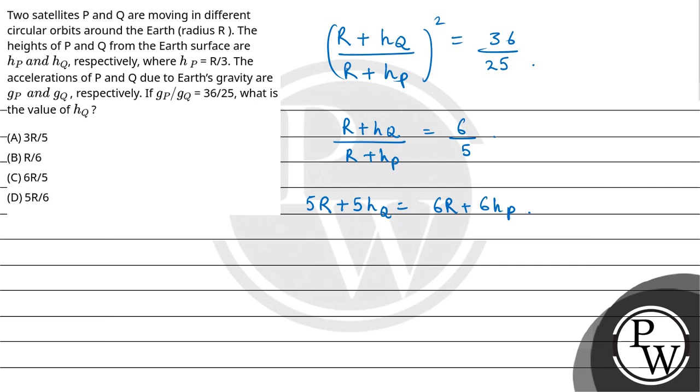So 5HQ minus 6HP is equal to 6R minus 5R. Now 5HQ minus 6HP, and the value given is that HP is equal to R by 3, and on this side we have R. This will get cancelled. You have the relation 5HQ will be equal to R plus 2R, that is 3R. So HQ will be equal to 3R upon 5.